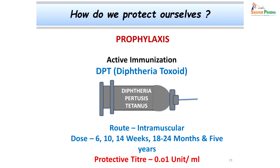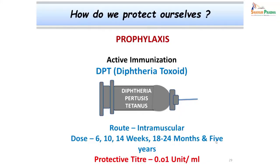Coming to how we protect ourselves — vaccines have been available for a long time. The DPT vaccine gives all newborns doses of diphtheria, pertussis, and tetanus at 6, 10, and 14 weeks; booster doses are also very important in endemic areas. Doses can be given up to 12 years of age — the regular schedule includes boosters at 18 to 24 months and 5 years, with two additional doses possible at 8 and 12 years of age to better control the disease. The protective titer is above 0.01 units per ml — a person above this level is considered immunized and is less likely to suffer from diphtheria.